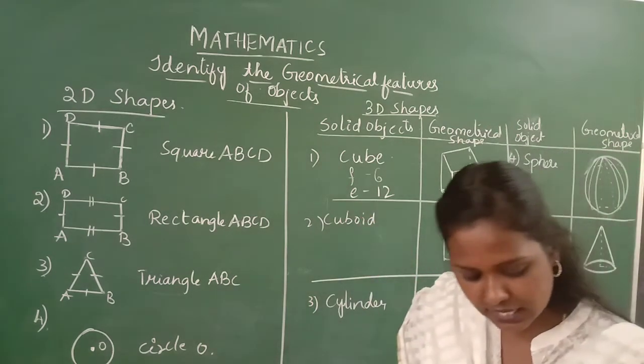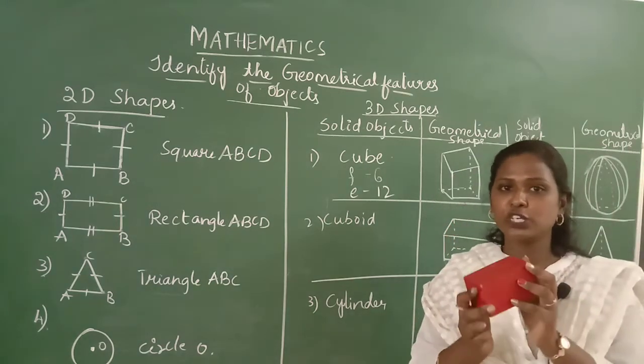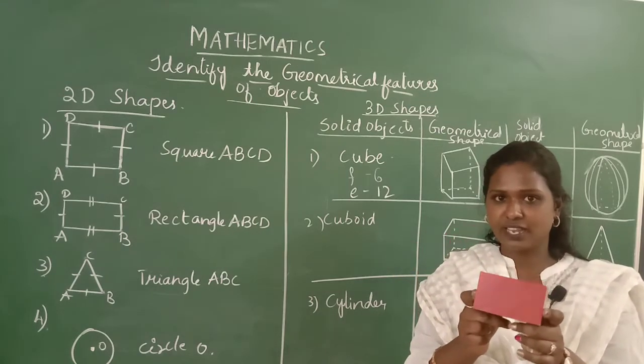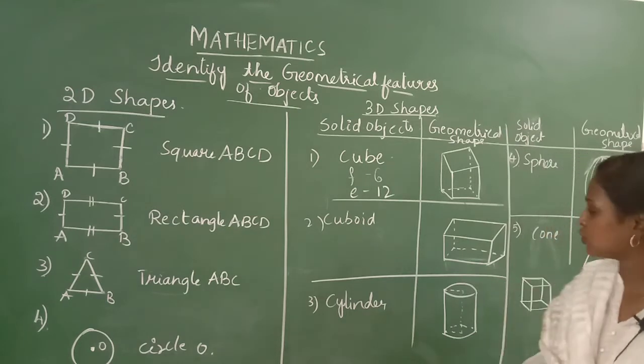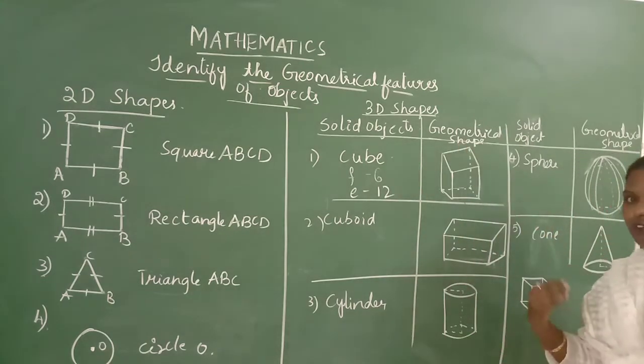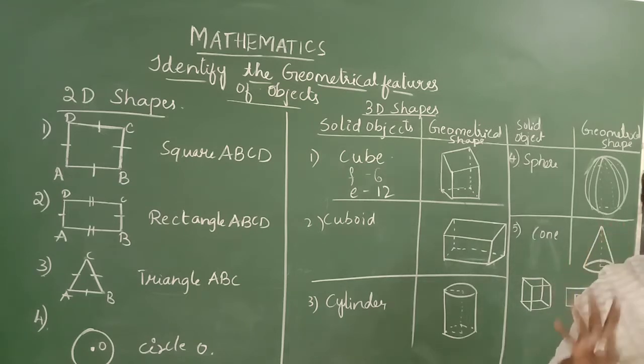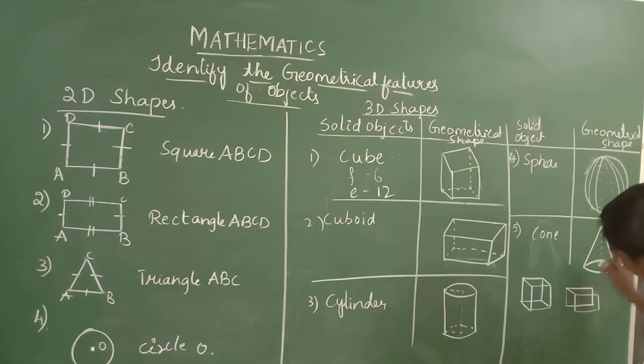Let us move to another example. Here I have the object of cuboid. Can you see the object of cuboid? It looks like the rectangle, right? Let us learn to draw the geometrical shape of cuboid. I am going to draw one rectangle, and same we have done in the cube, another rectangle. And we know that rectangle also has four corners. We are going to join the corners. This is the shape of cuboid. Very easy, no?